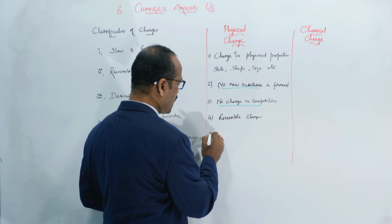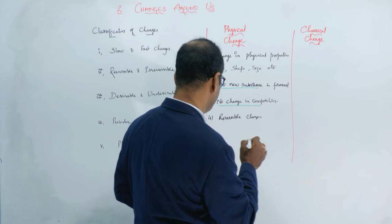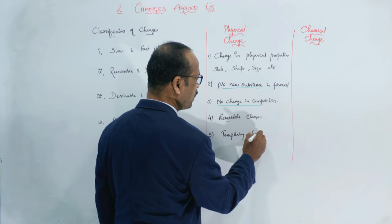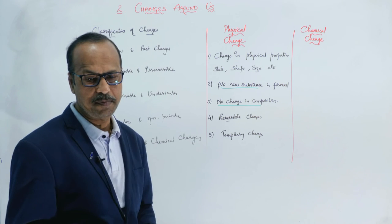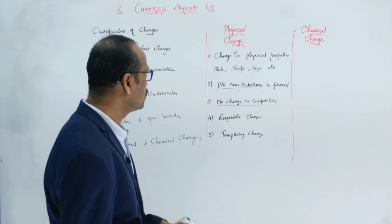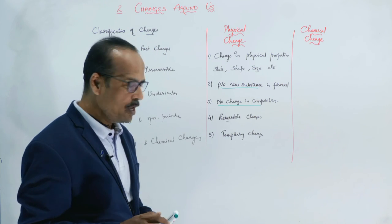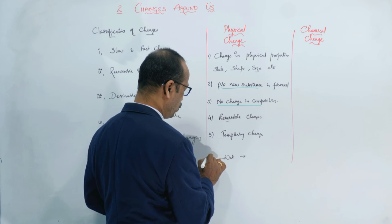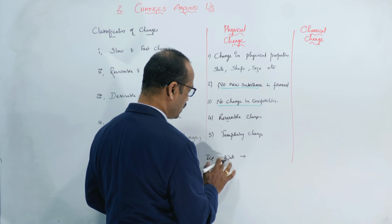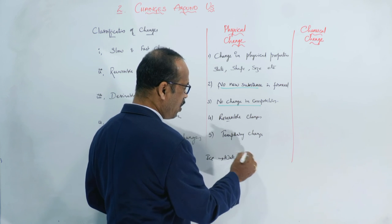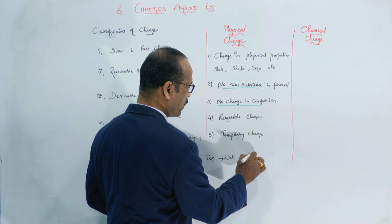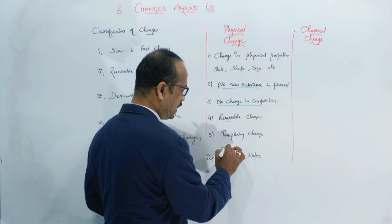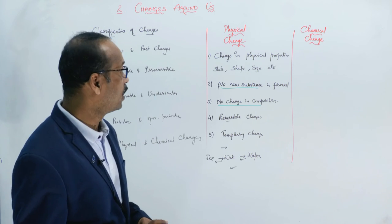Physical changes are also temporary — they last only for some time. So in summary, physical change examples are: water converted into ice on cooling, ice converted back to water on heating, and water converted into vapour on heating. On cooling the vapour, it converts back into water. These are all physical changes.